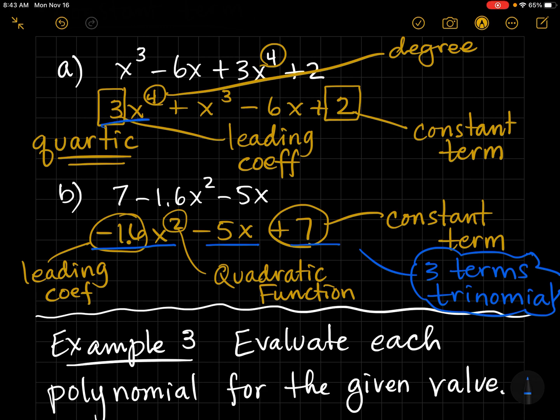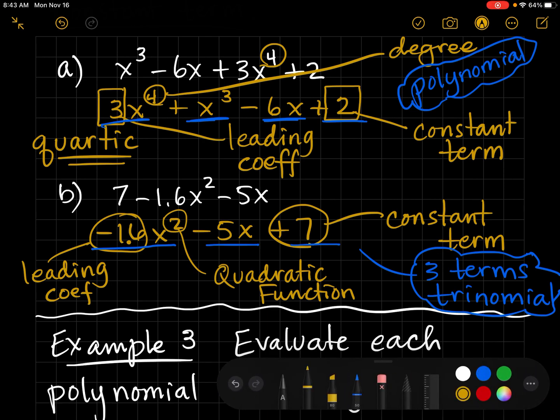Sometimes, we don't have a special name for the number of terms. Like in part A, one, two, three, four terms doesn't have a special name. So, we just say it's a polynomial. Remember, two terms is a binomial and one term is a monomial. So, just a little extra review there.